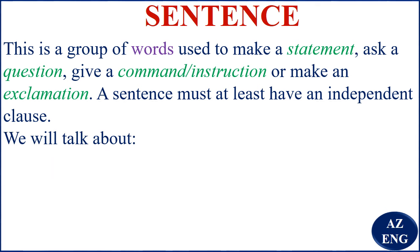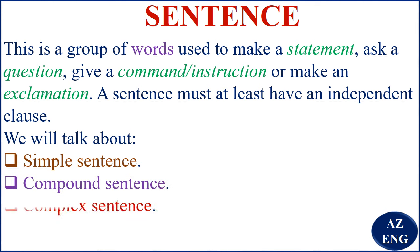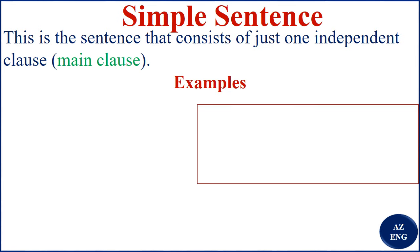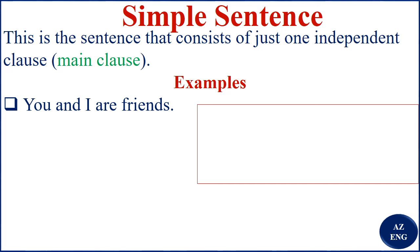Before the examples, we'll talk about simple sentence, compound sentence, complex sentence, and compound-complex sentence. A simple sentence is a sentence that consists of just one independent clause — that is, one main clause. For example, 'You and I are friends' is one independent main clause, the meaning is complete, so we say it is a simple sentence.